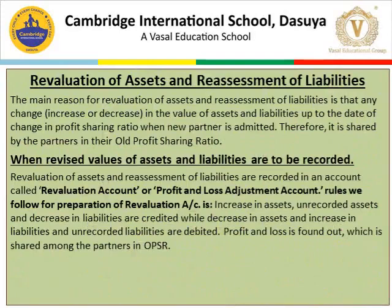The next topic of this chapter is revaluation of assets and reassessment of liabilities. The main reason is that any change — increase or decrease — in the value of assets and liabilities up to the date of change in profit sharing ratio is shared by the partners in their old profit sharing ratio. Partners may decide to either record or not record the revised values of assets and liabilities in the books of the firm.